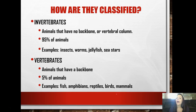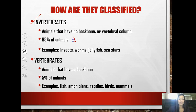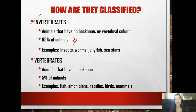So how are animals classified? There are two kinds: invertebrates and vertebrates. Invertebrates do not have a backbone or vertebral column. This actually comprises 95% of animals. These are things like insects, worms, jellyfish, sea stars - all of these are invertebrates, but they're still animals.